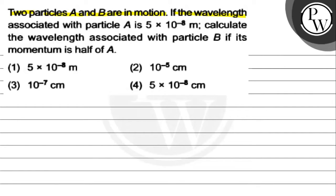If the wavelength associated with particle A is 5 × 10^-8 meter, calculate the wavelength associated with particle B if its momentum is half of A. Option 1, 5 × 10^-8 meter.